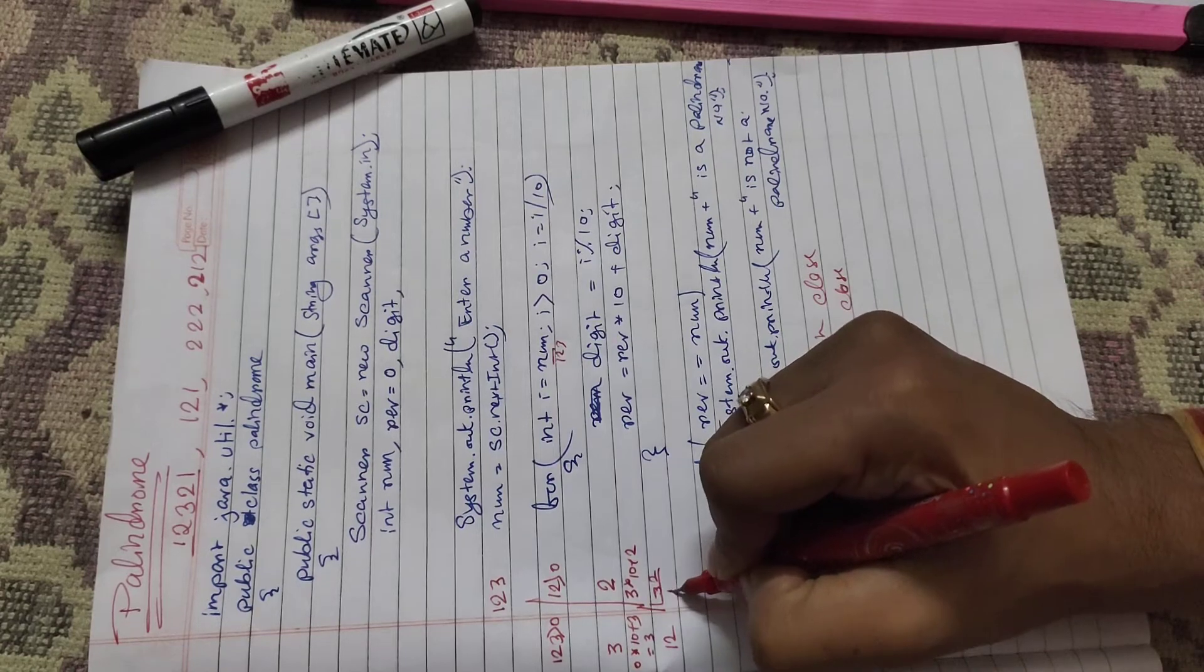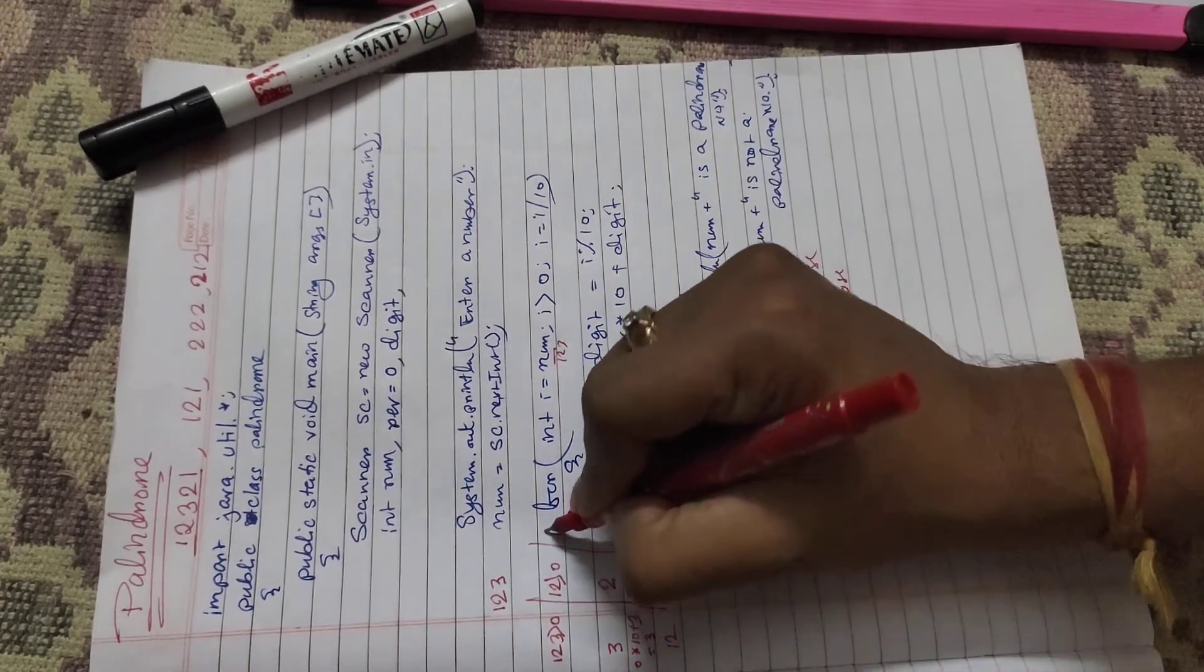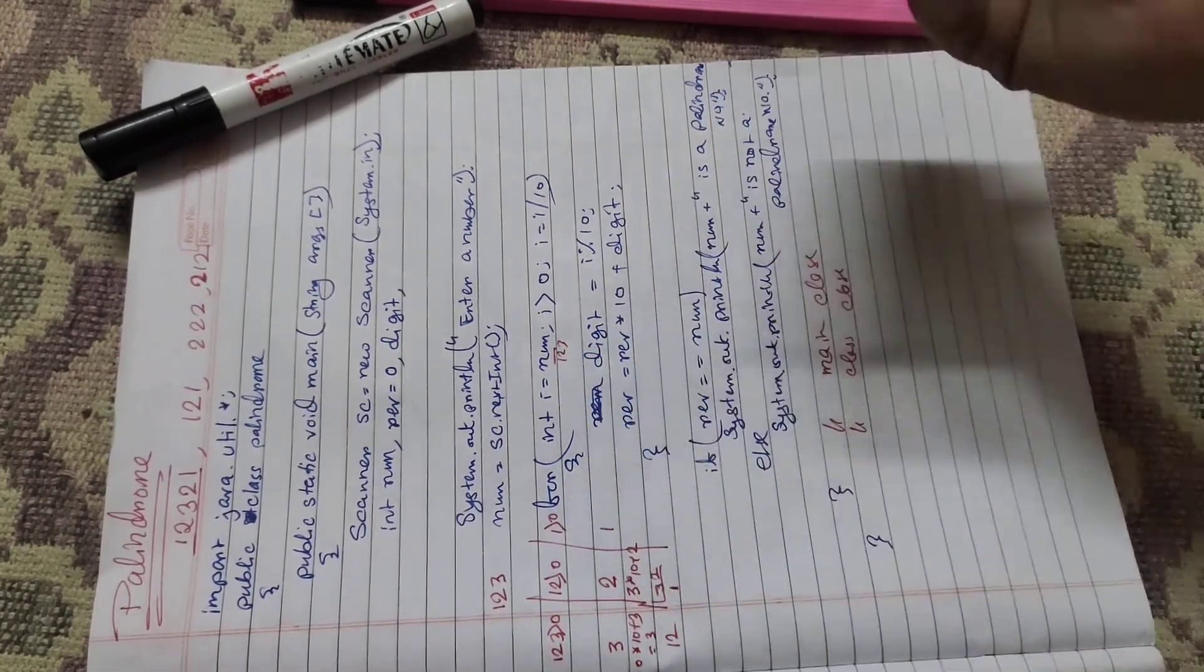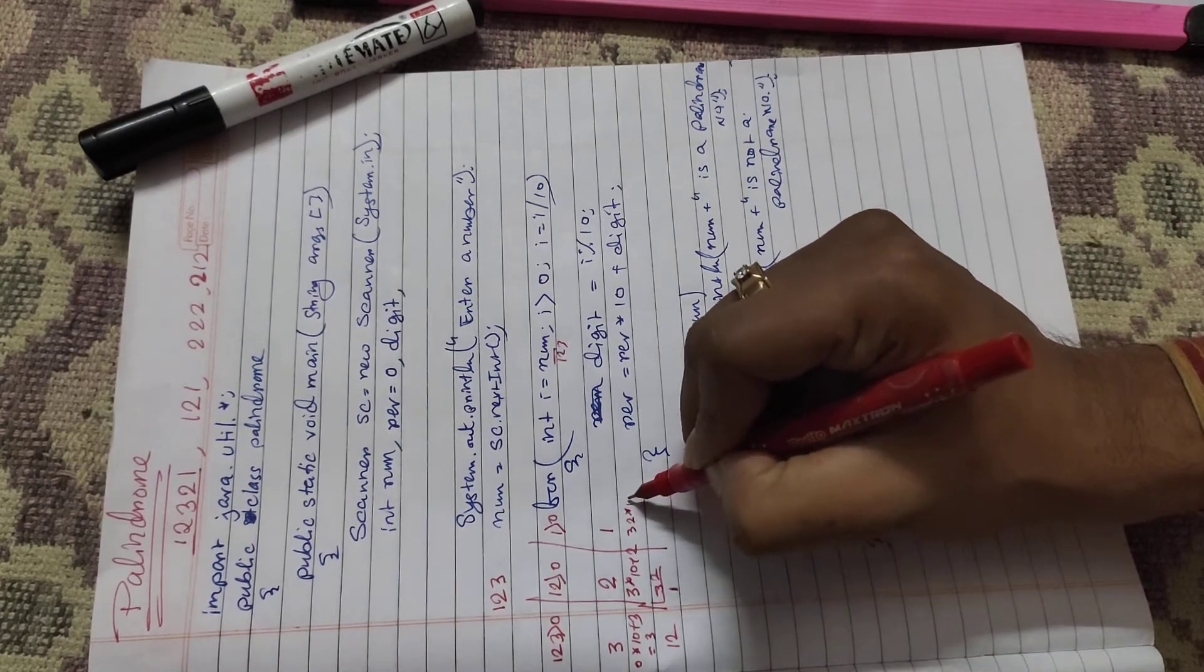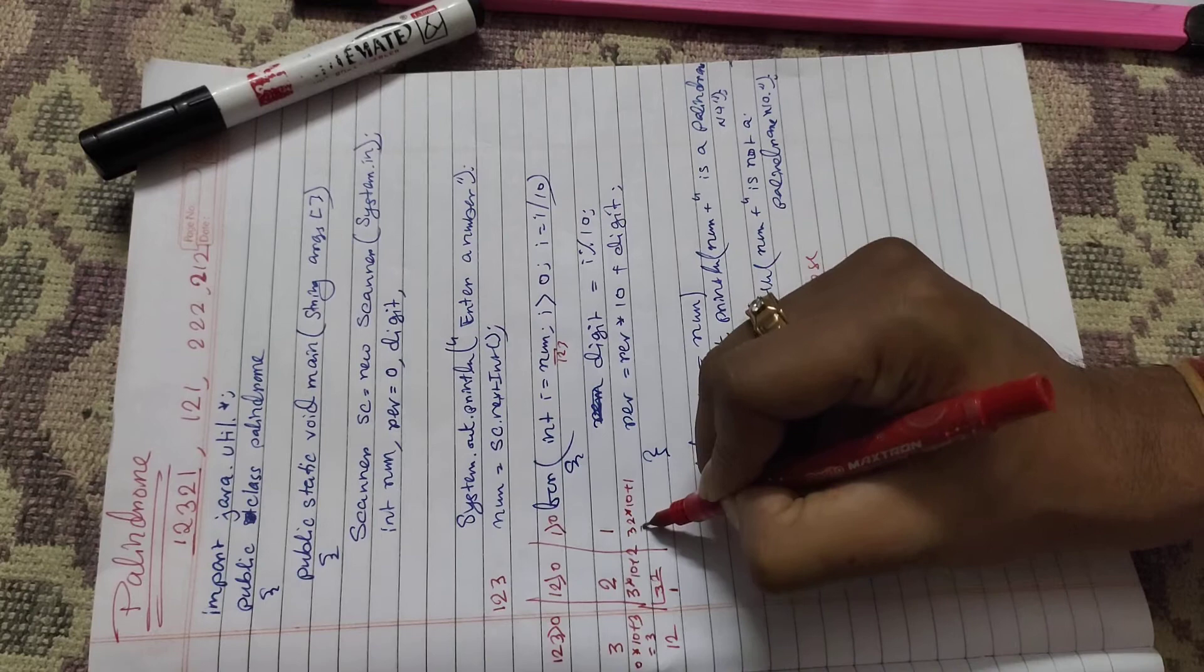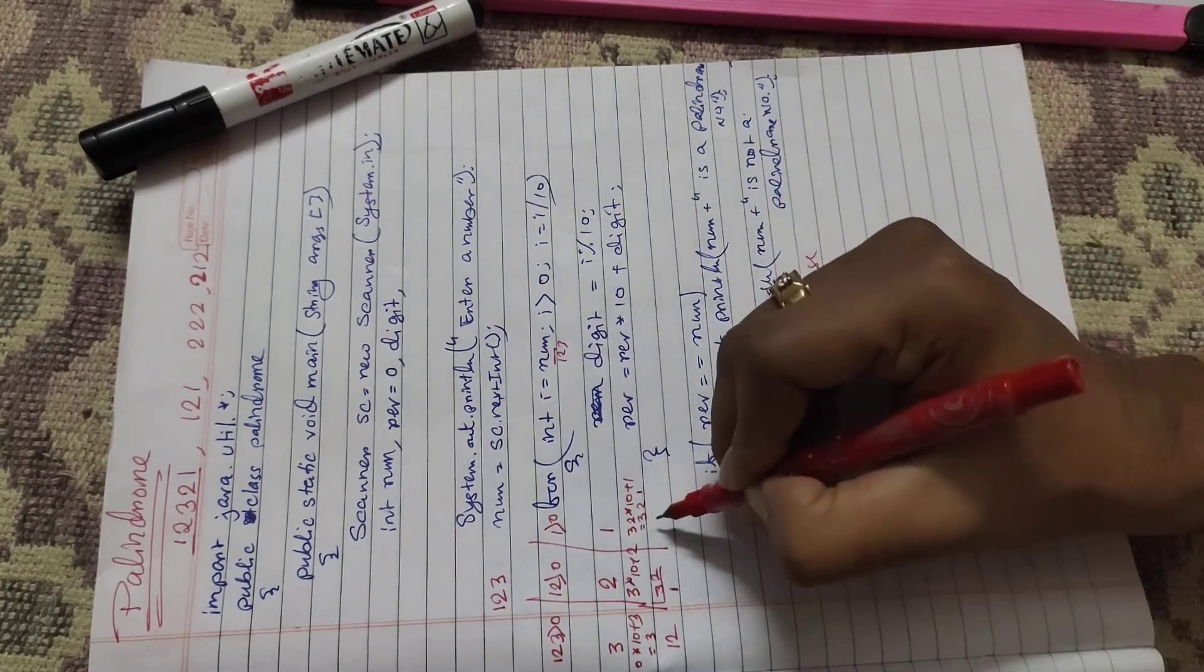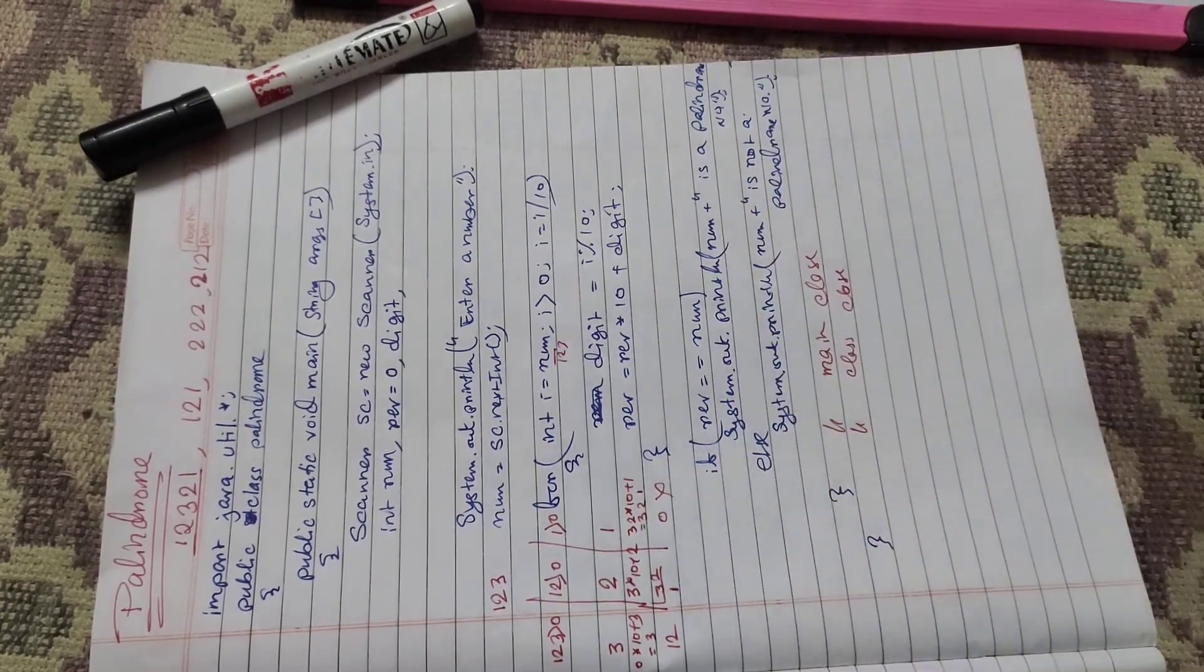And the i value is 1. One greater than zero - yes. Digit is 1, so 32 into 10 plus 1 equals 321. And i becomes 0 - that is the end of the for loop.